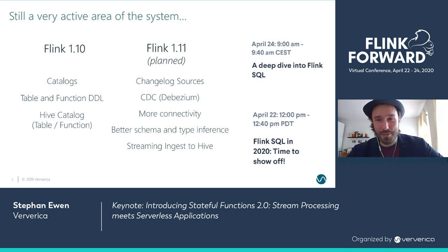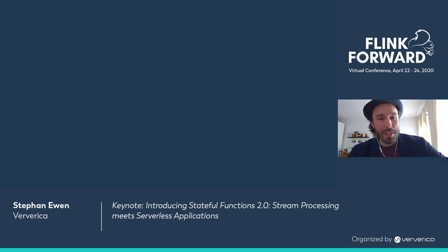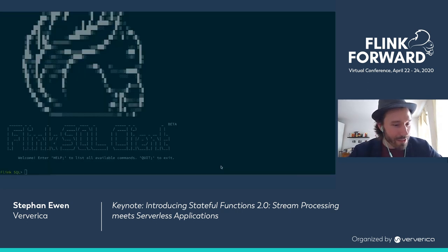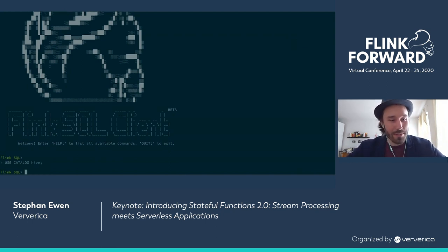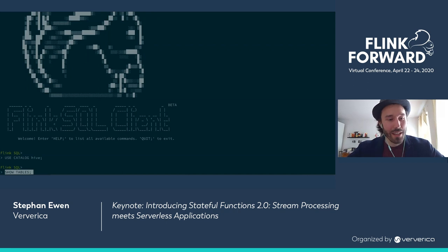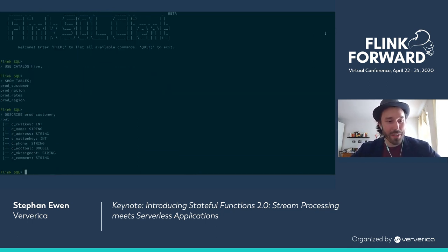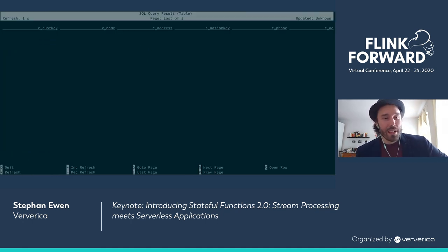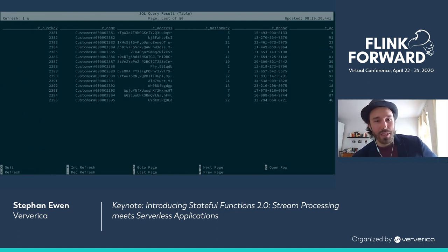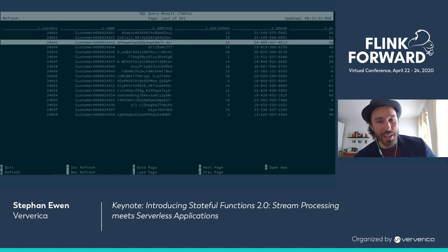I'd like to show you at least a small teaser of what you can actually do in the latest version of Apache Flink, using the SQL client that comes with the project. So this is what it looks like these days to use SQL from the client in Flink. We're activating a Hive catalog that Flink has been integrated with, exploring the tables stored in the catalog, describing the schema of some tables, and then issuing a first query — a streaming query going against a bounded table. The SQL client gives us a paginated view to explore the results.